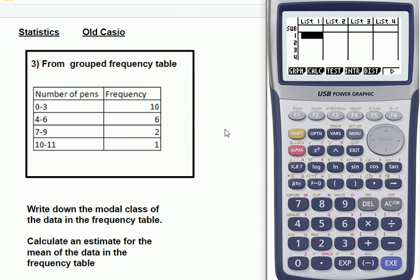We need to put the data in, so what you can't put in is 0 to 3. You have to put in the midpoint, so what you do is assume that everybody has 1.5 pens. 1.5 is the midpoint of 0 and 3. If you're not sure about that, just do 0 plus 3, and then divide by 2.